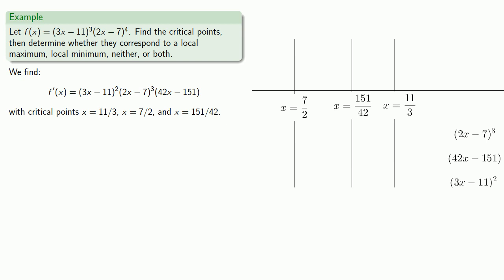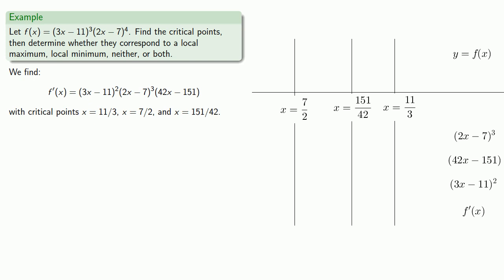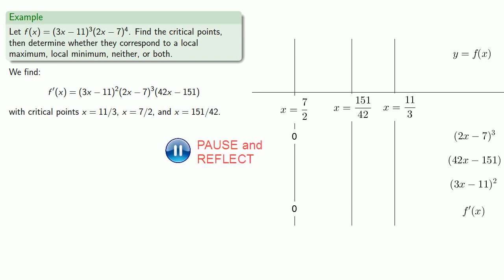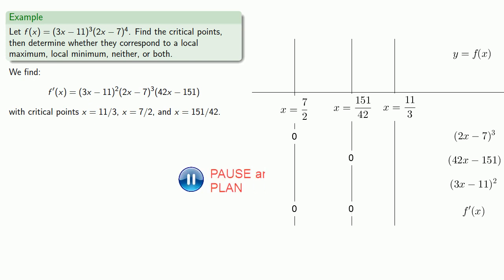Our three critical points x = 7/2, x = 151/42, and x = 11/3 partition the real line into 4 intervals and 3 boundaries, giving us 7 pieces to examine. At each critical point, one of the factors is zero, making the derivative zero as well. Specifically, at x = 7/2 the factor (2x − 7)³ is zero; at x = 151/42 the factor (42x − 151) is zero; and at x = 11/3 the factor (3x − 11) is zero.